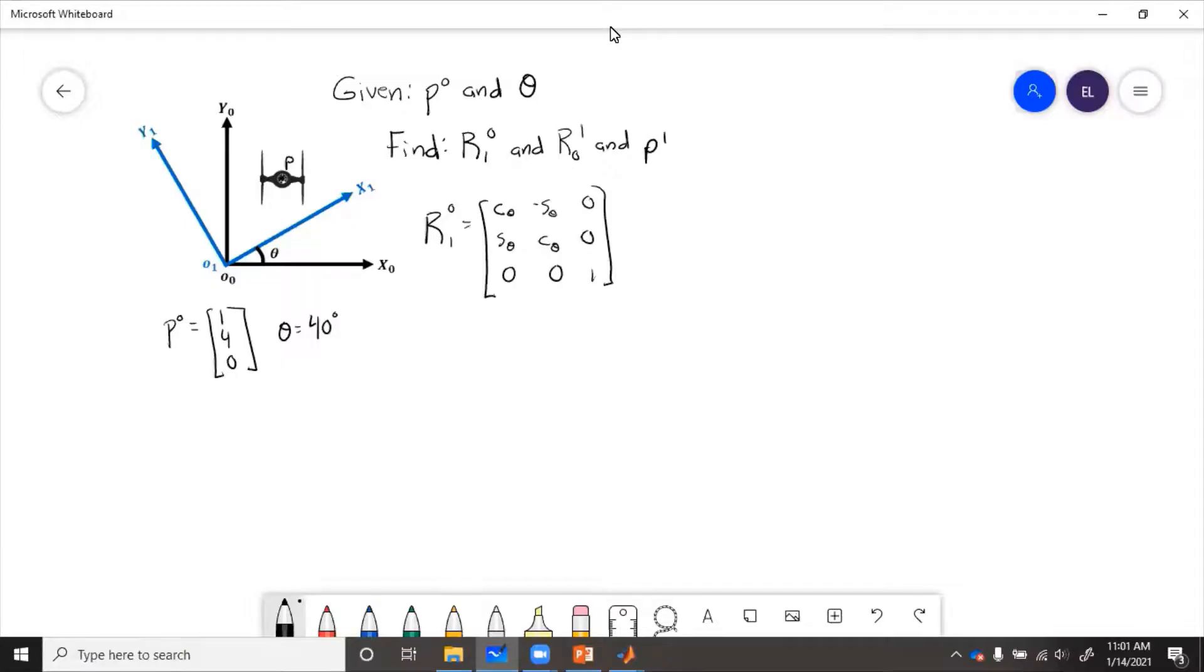So we plug theta into here, then R10 is going to equal cosine, sine, minus sine, cosine, all that of theta, then we get 0.94, 0.34, negative 0.34, 0.94, 0, 0, 0, 0, 1. So this is R1 with respect to zero.